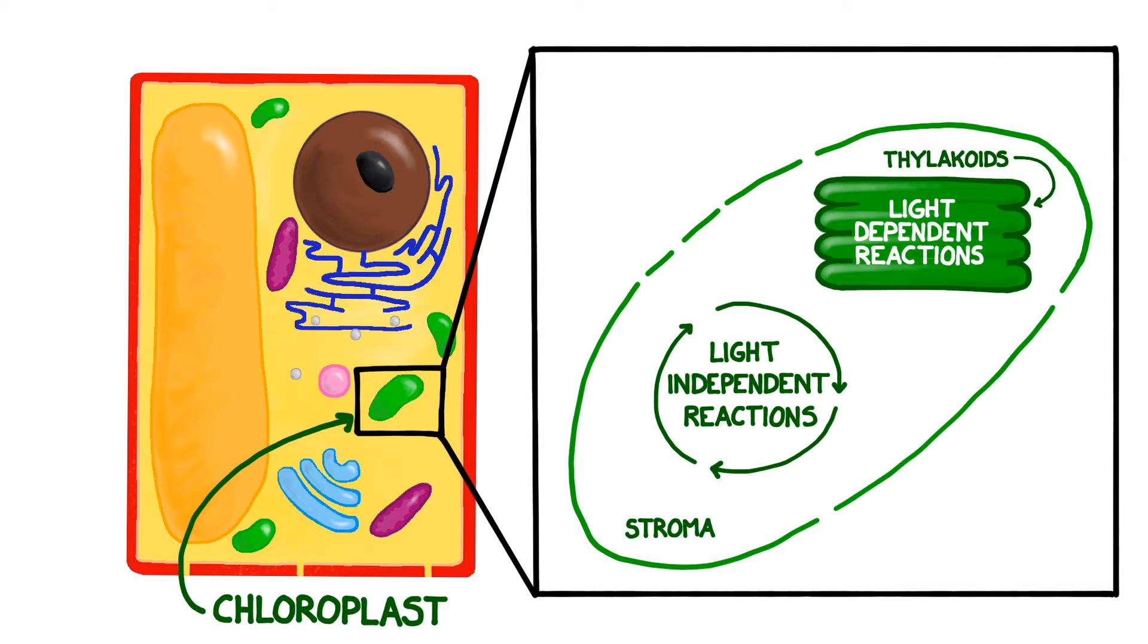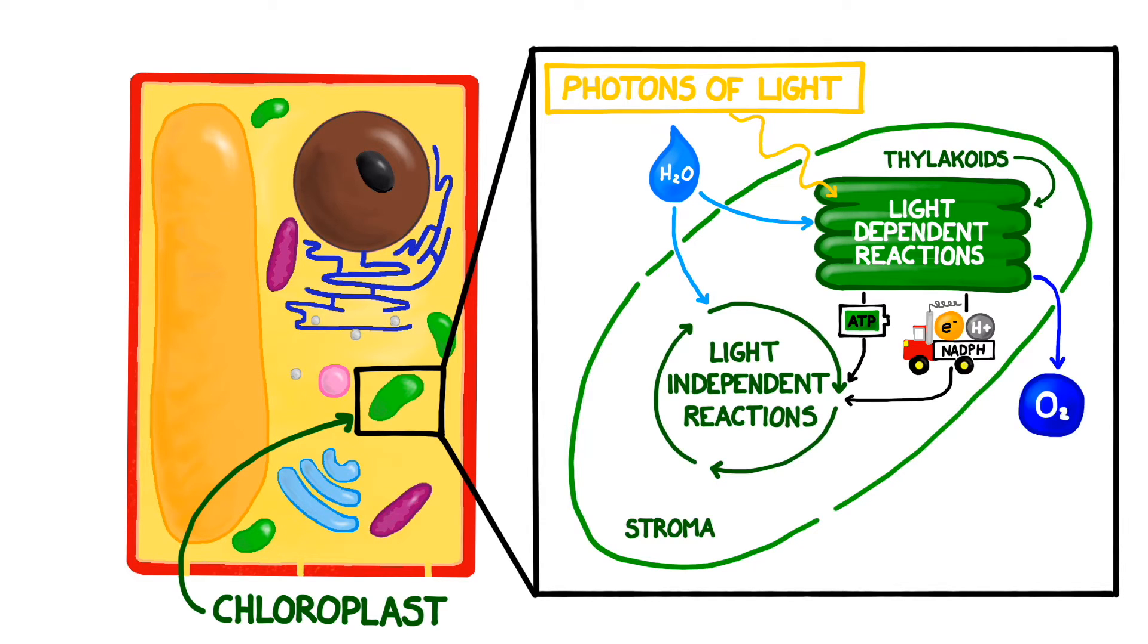We'll start with the light-dependent reactions. During the light-dependent reactions, we use photons of light and water to recharge molecules of ADP into ATP and also reload molecules of NADPH. ATP and NADPH are very important molecules because later on we'll use them to manufacture sugar. The light-dependent reactions also generate oxygen as a waste product.